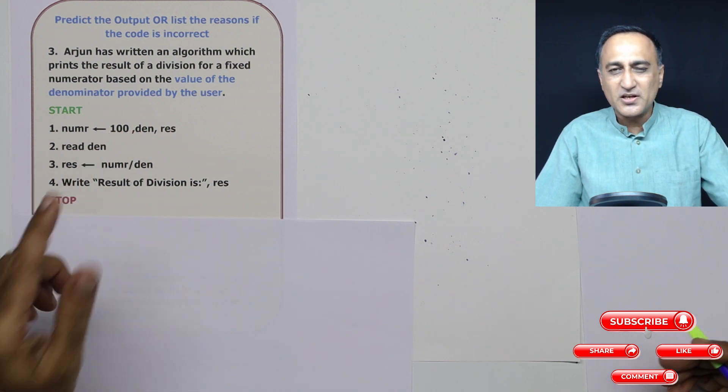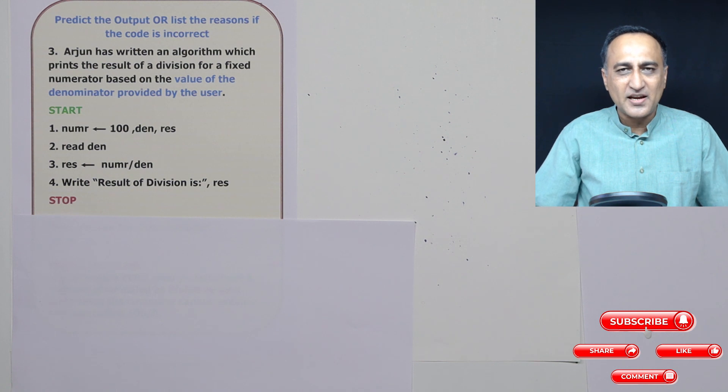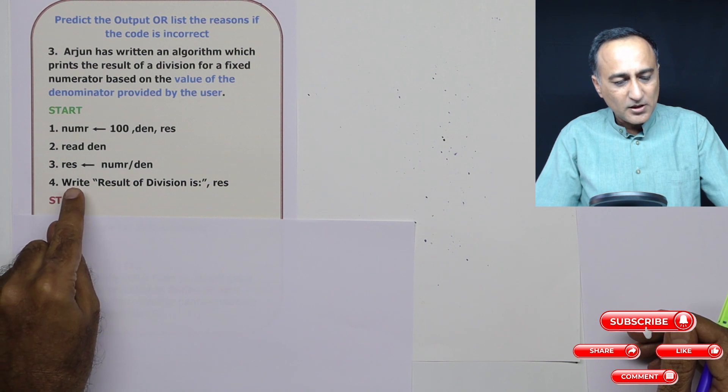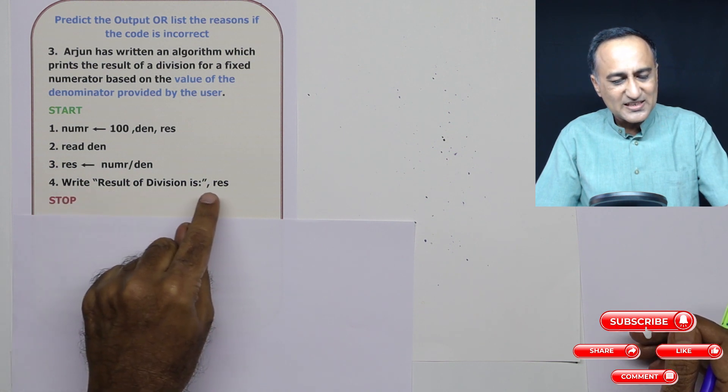I read the denominator. User can enter 1, 2, 10, minus 9, 5, 6, and so on. Result is numerator upon denominator. Now I say result of division is RES.